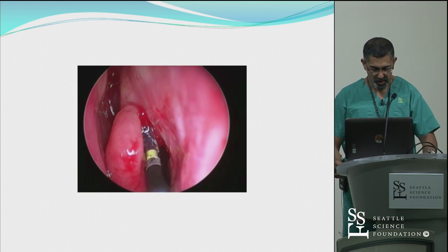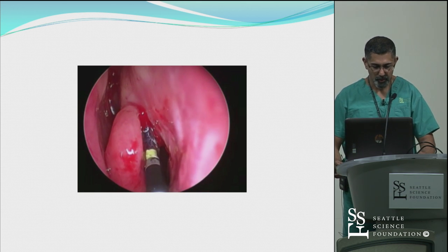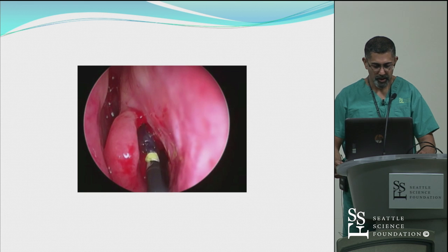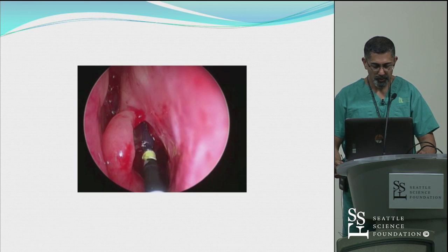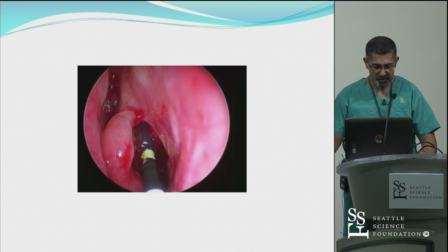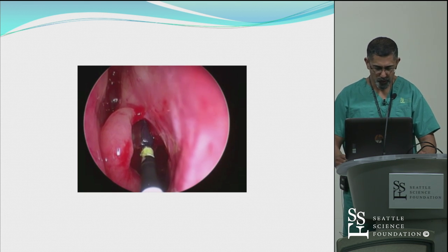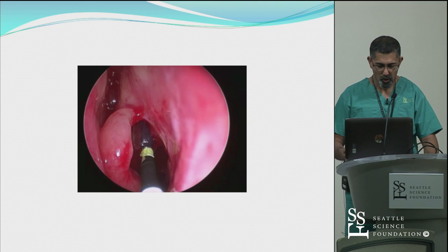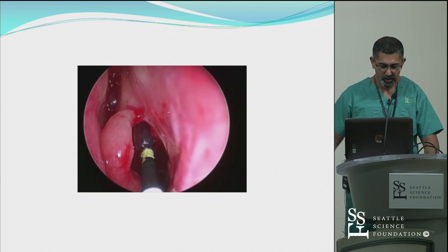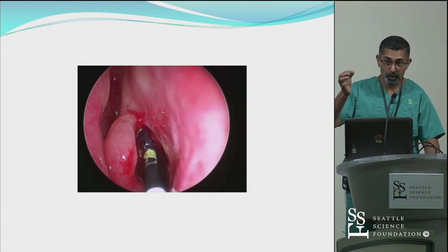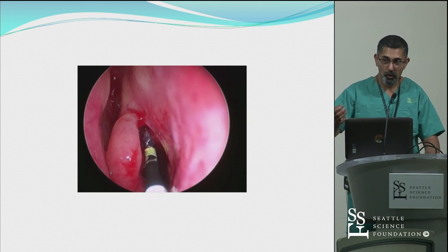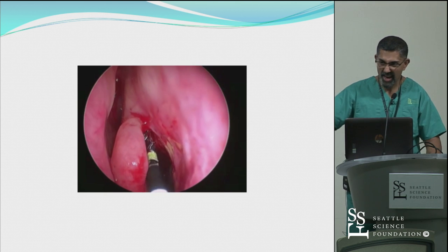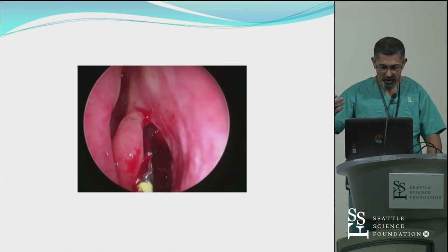Then the balloon can easily be threaded over that. This particular patient — I think I was doing a turbinate reduction — I did it in the OR, but you can see how this could very easily be done in the clinic, especially when you know where that hole is. There's no anatomy in the way.